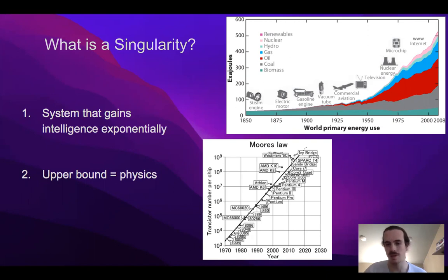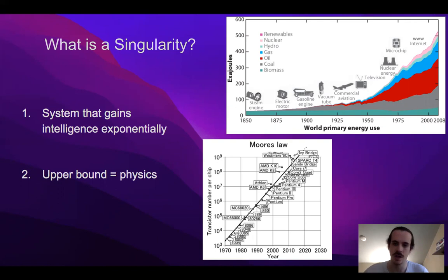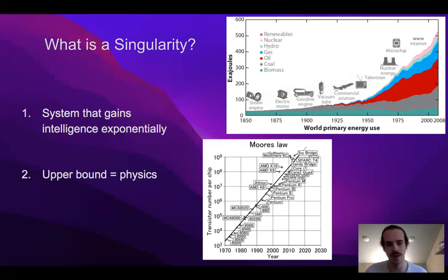This will eventually end, and to understand why we can look at Moore's law. In the 80s the first computer chips had only around a thousand to ten thousand transistors, but today in 2021 we have chips with billions of transistors. Eventually we'll reach the limit of physics — the most compact amount of transistors physically possible — and that's when Moore's law ends. We can apply this to intelligence too: eventually we'll reach a physical limit and become the smartest system permitted within physics. That's where this singularity is headed.